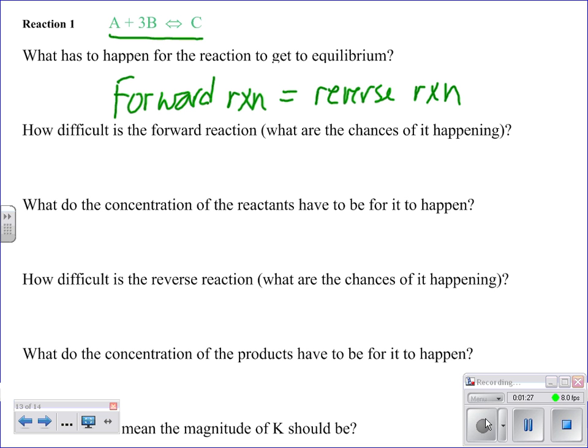How difficult is it for the forward reaction to occur? In other words, what are the chances of it happening? If we think about what that forward reaction is, we're taking four particles, 1A and 3B, and we're trying to combine them into one.